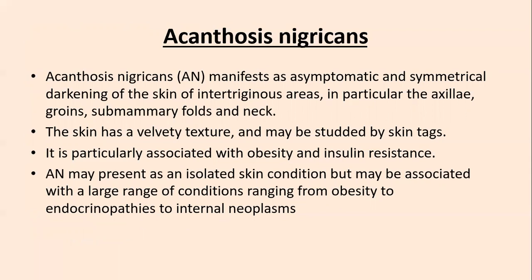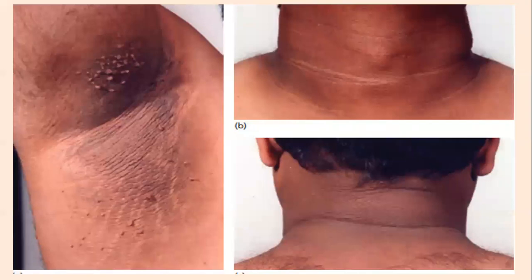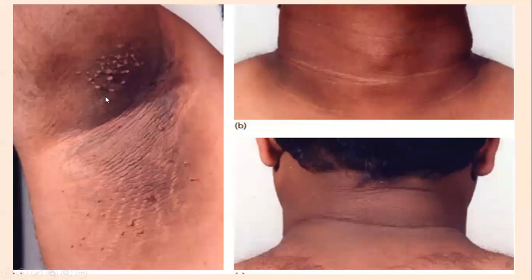The second disease to discuss is acanthosis nigricans. It manifests as asymptomatic and symmetrical darkening of the skin of intertriginous areas, particularly the axilla, groin, submammary fold, and the neck. The skin has a velvety texture and may be studded by skin tags. It is particularly associated with obesity and insulin resistance. Acanthosis nigricans may present as an isolated skin condition but may be associated with a large range of conditions, ranging from obesity to endocrinopathies to internal neoplasms. These images show acanthosis nigricans of the axilla and back of neck — the skin is dark and velvety with multiple skin tags.